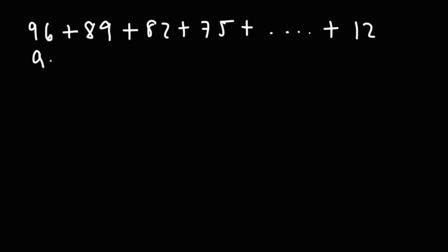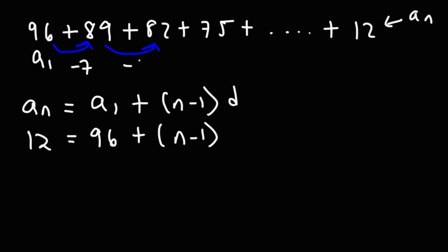So this is the first term. This is the last term. Just like before, let's calculate n, the number of terms. So a sub n is 12. a sub 1 is 96. And the common difference, so going from 96 to 89 or 89 to 82, we need to add negative 7. So d is negative 7.